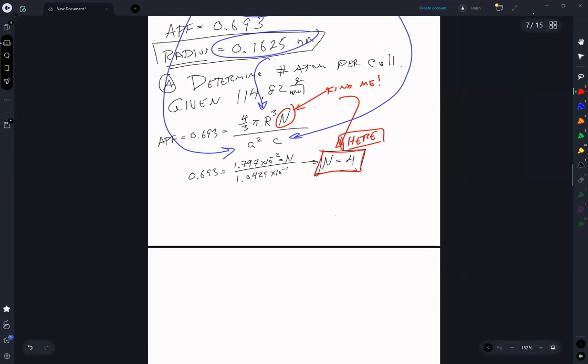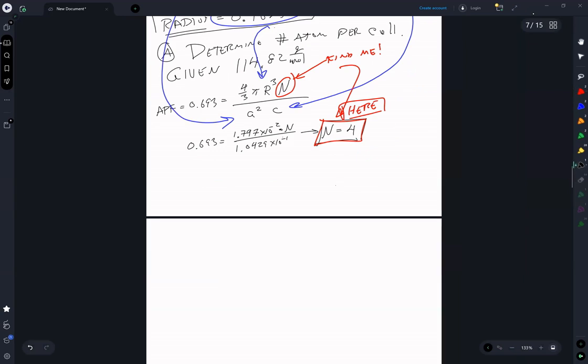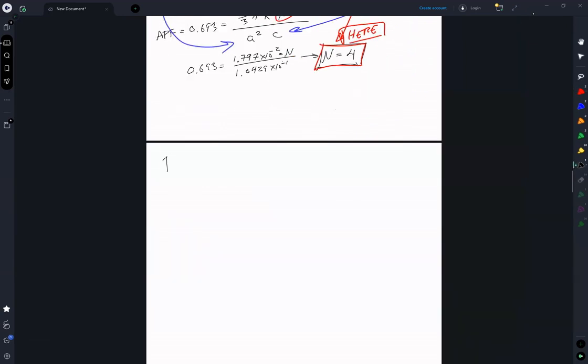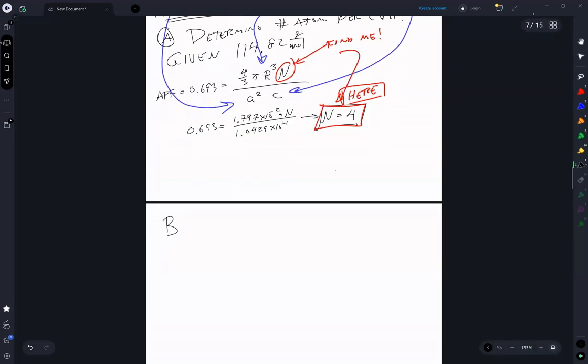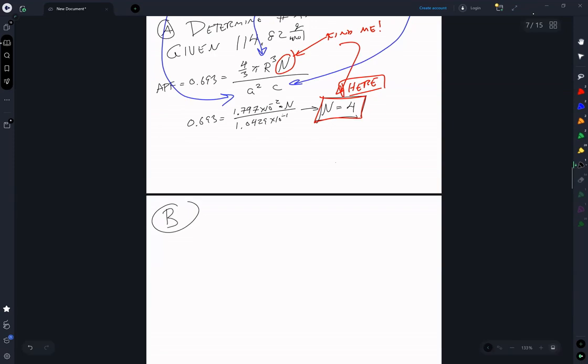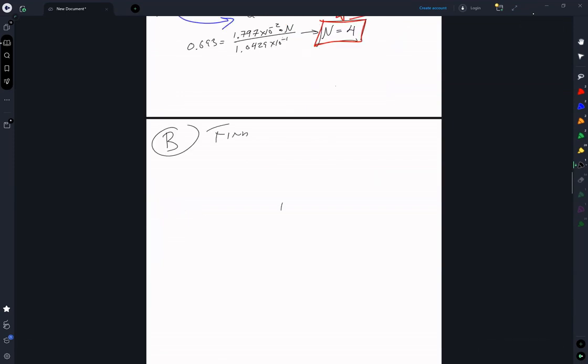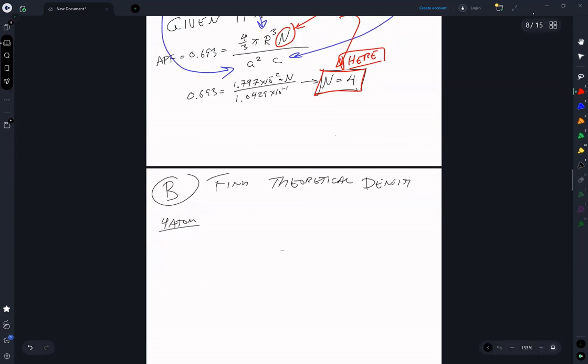Next, part B of the problem is to find the theoretical density. That is done by using 4 atom per the volume, which is right here.